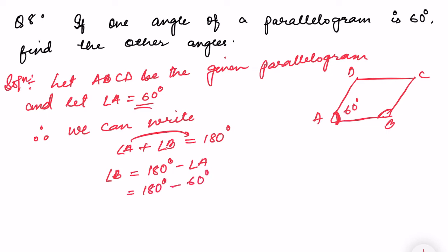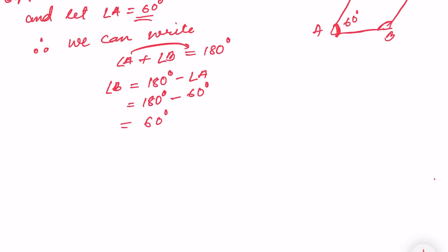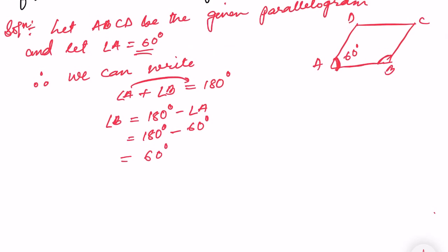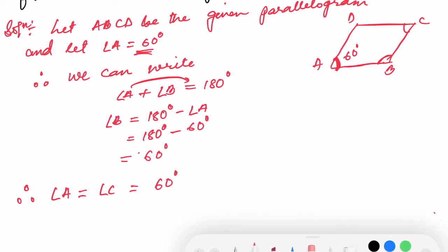Since angle A is 60°, angle B equals 180° minus 60°, which is equal to 120°. Also, since opposite angles of a parallelogram are equal, angle A is equal to angle C, which is equal to 60°.